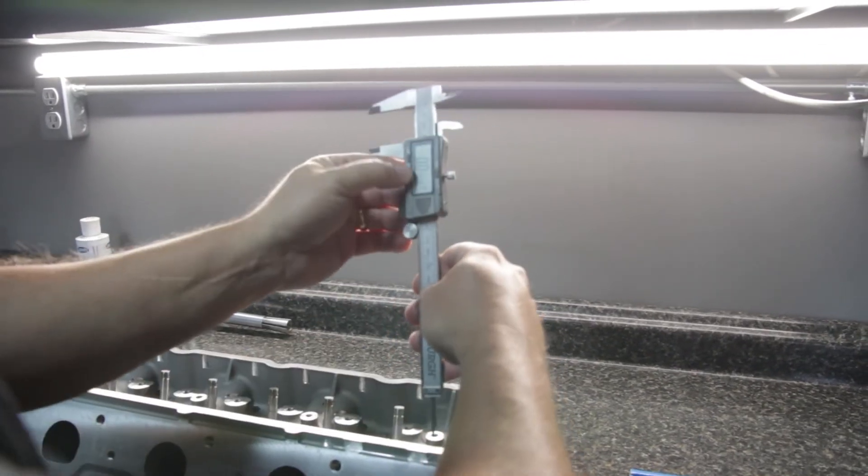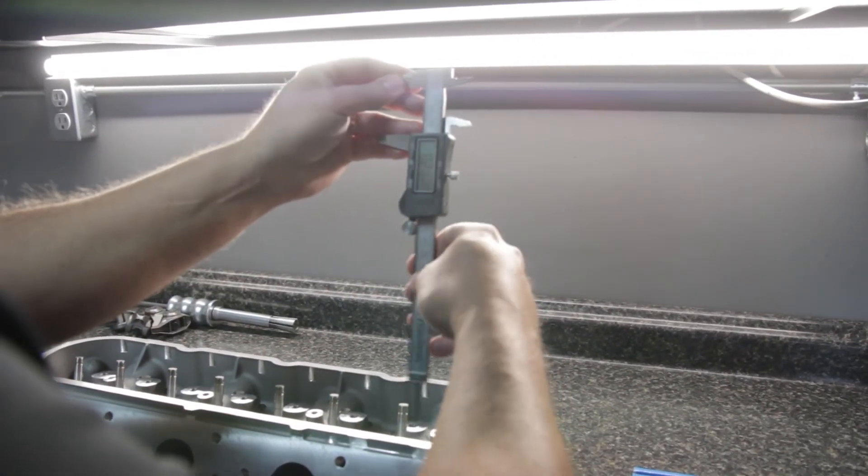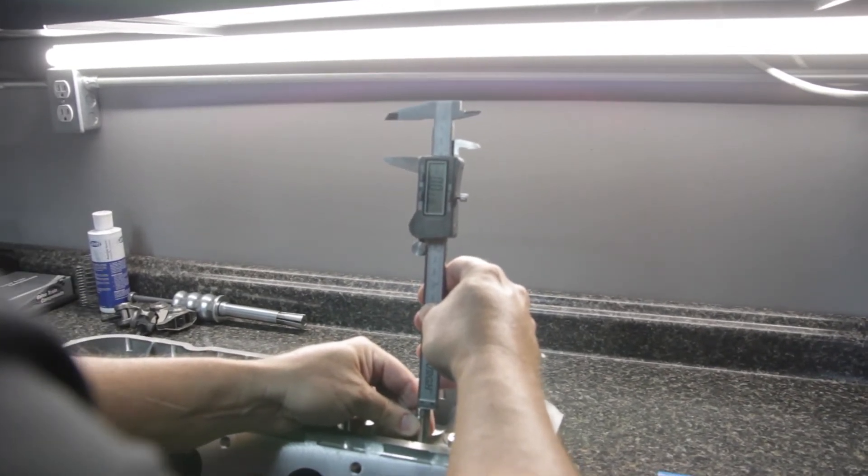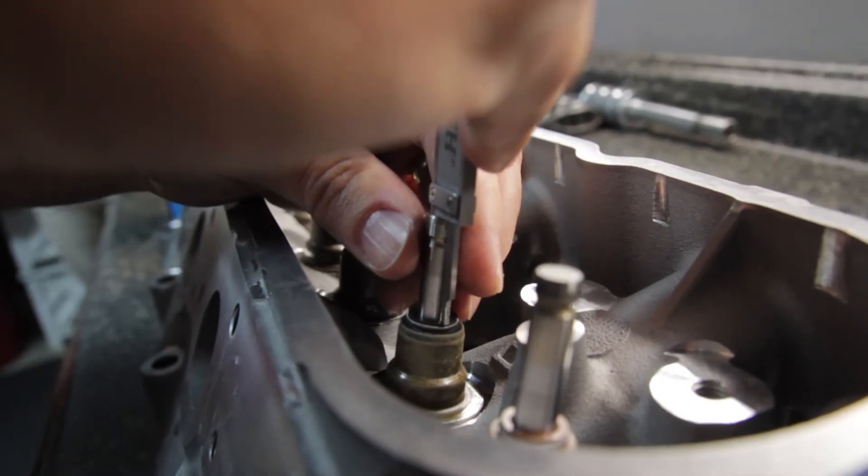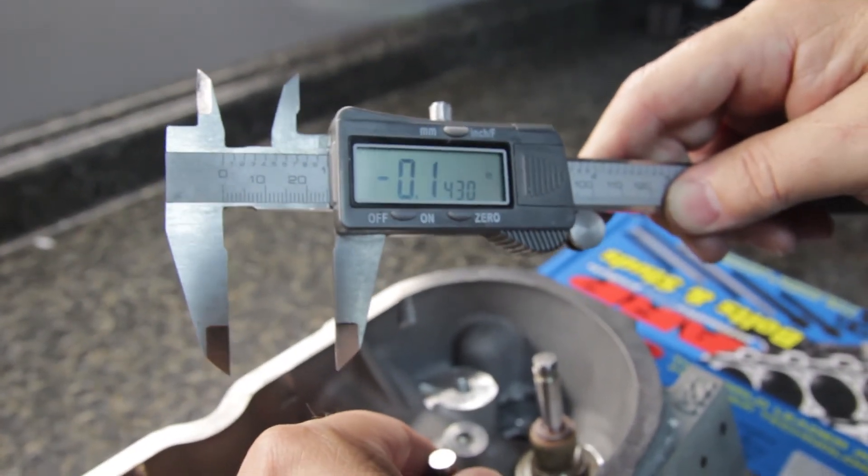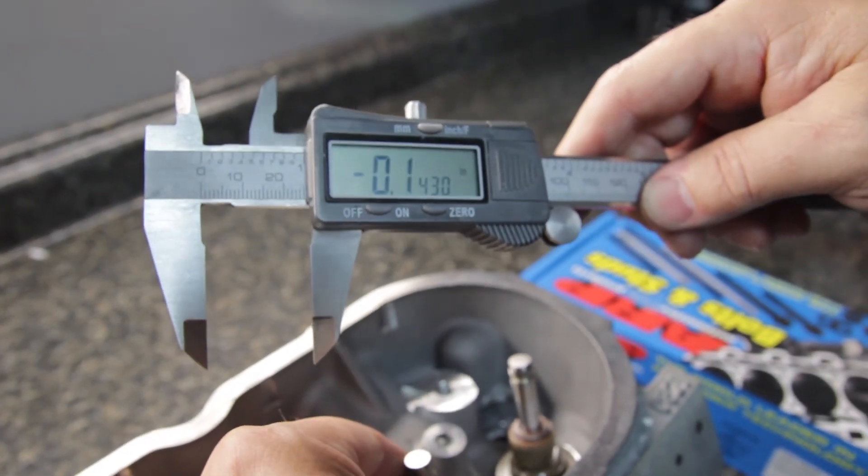Check it a couple of times to make sure you're repeating. You can see we're repeating within a thousandth. Then you drop the valve from that point. We got about 143 thousandths using this method.